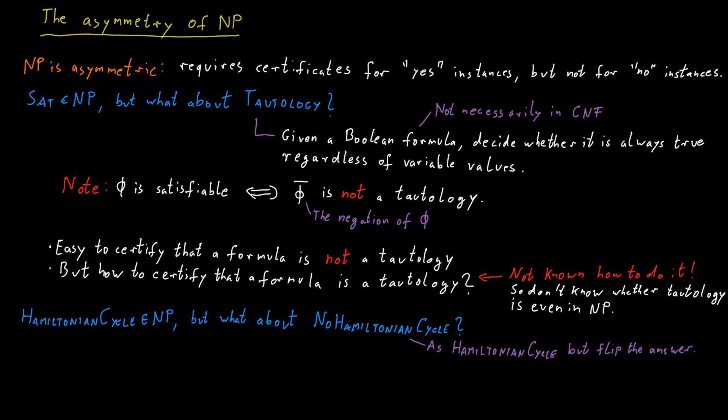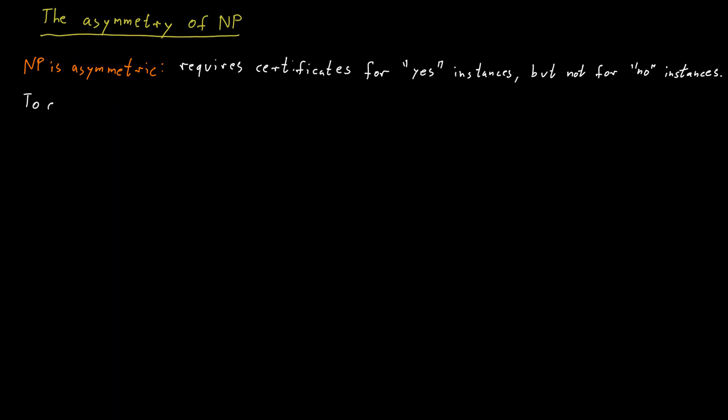We cannot classify no Hamiltonian cycle within the complexity classes we've learned so far. So we need a new different complexity class. This new complexity class is called CoNP. NP contains all the decision problems for which we have succinct certificates that can be checked in polynomial time. So satisfiability, Hamiltonian cycle, composites are all languages that are examples that are in NP.